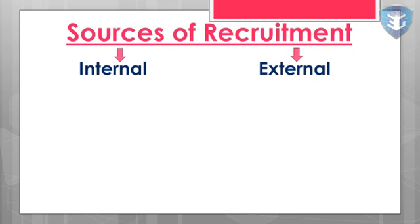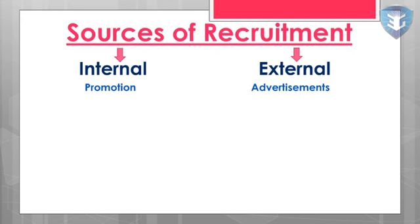There are two sources of recruitment: internal and external. Internal sources include promotion — we can promote a candidate from inside the company, offering a good salary, good designation, proper increment and appraisal. Another internal source is transfers — we can recruit candidates by transferring them from one location to another to fulfill job vacancies.